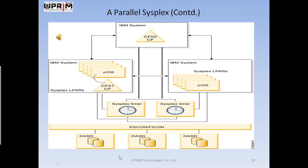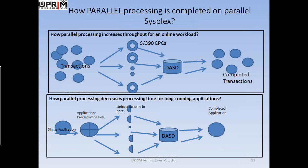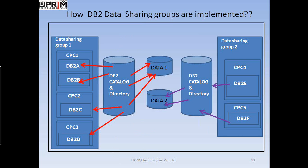A coupling facility can be a separate system or a logical partition, called an LPAR. That was how a real-time parallel system is installed these days. On the next screen, screen number 11, we have two parts. The first part talks about how parallel processing increases throughput for an online workload, and the next part talks about how parallel processing decreases processing time for a long-running application.